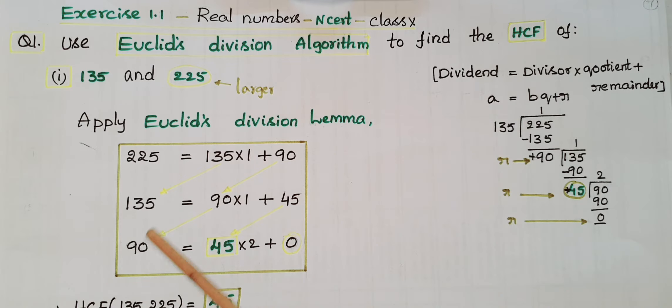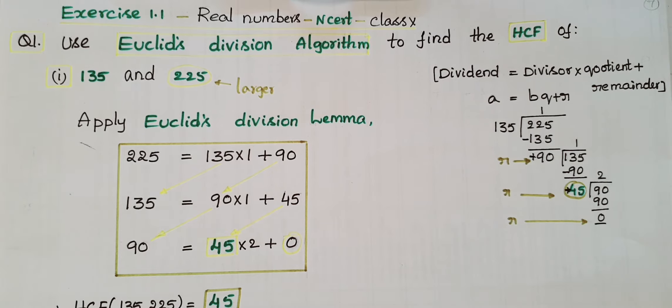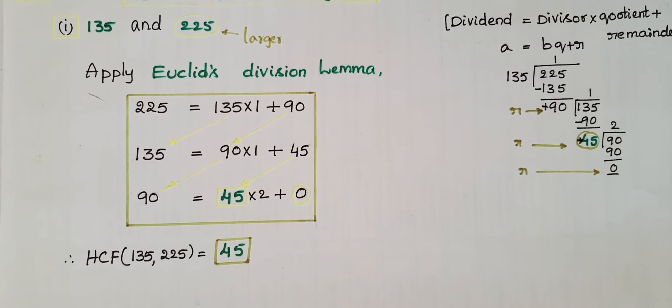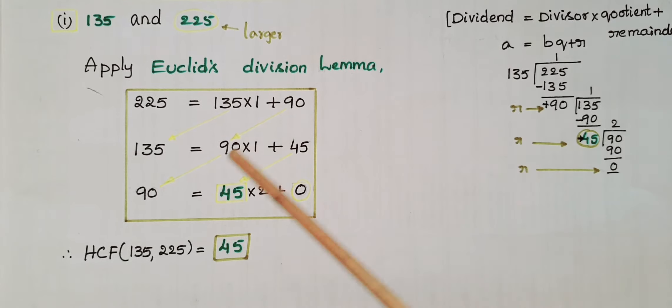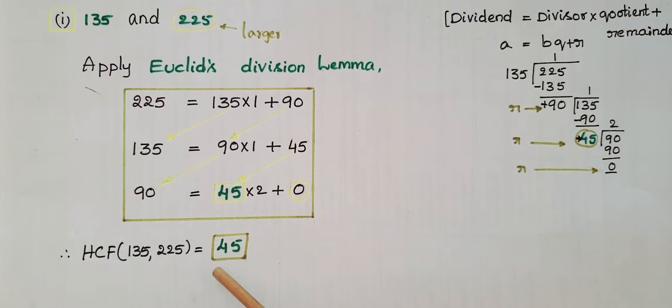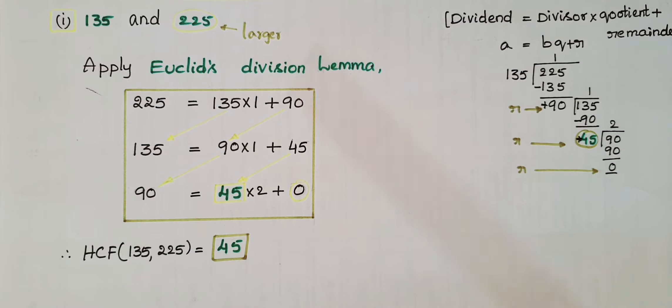The HCF of 135 and 225 is equal to 45. Here the divisor is 45, so the HCF is 45.